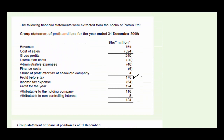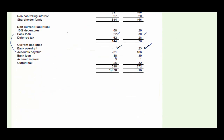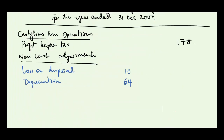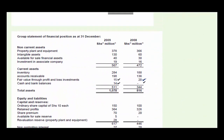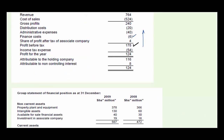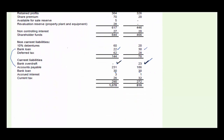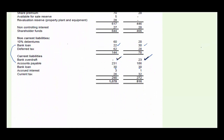Looking above the line for non-cash items, we always include finance costs. Under non-cash adjustments we add back finance costs of 6 — it is an expense. Then we look through the liabilities to determine if there is any accrued finance cost. There is: accrued interest of 3 at year end and 1 at year start, meaning the actual finance cost paid must be different.